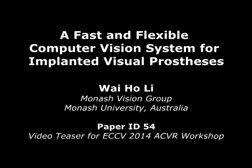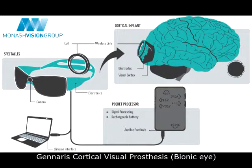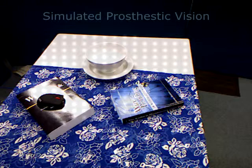Hi, I'm Waiho from Monash Vision Group. We are developing an implanted visual prosthesis, or bionic eye. Prosthetic vision is made up of a low-resolution pattern of dots called phosphenes. Simulated prosthetic vision visualizes what an implanted patient may see with our device.